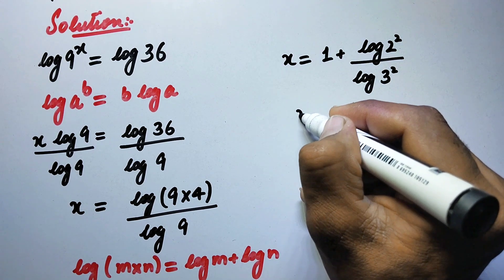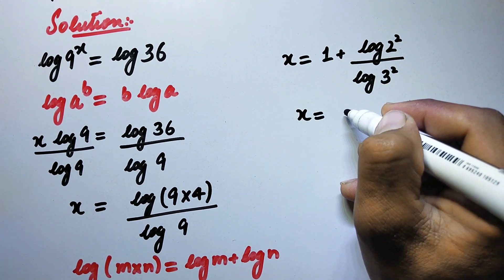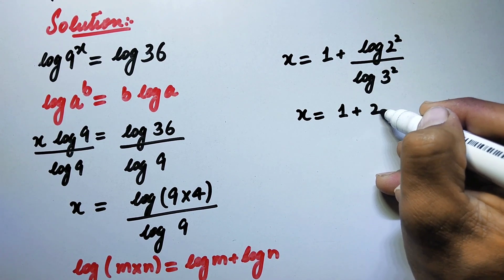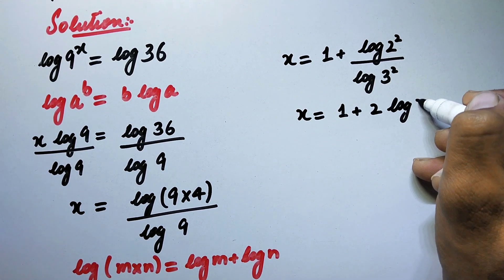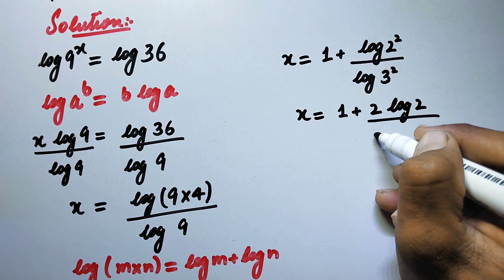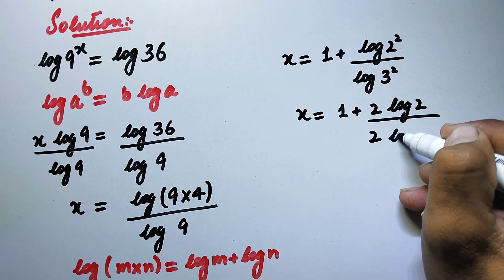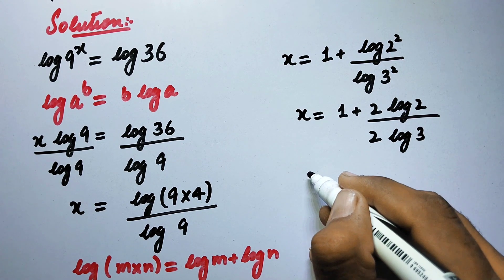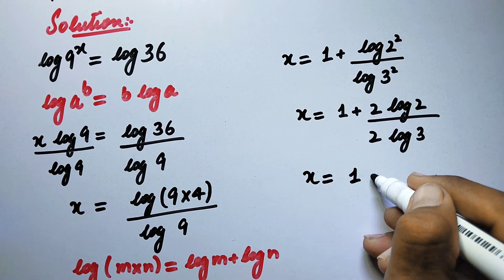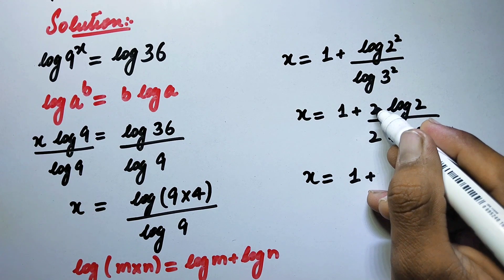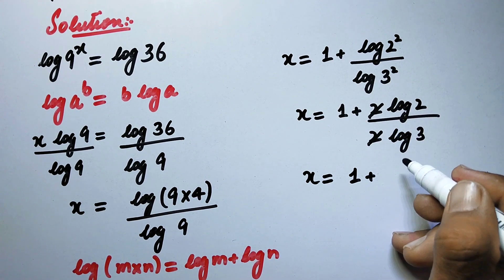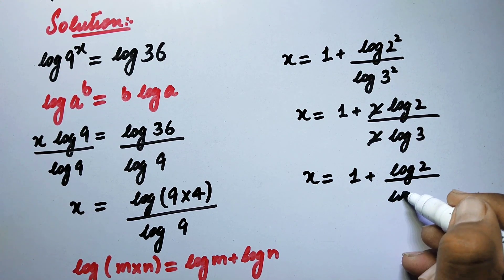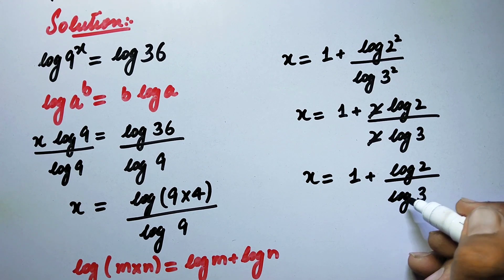So now here we can write x is equal to 1 plus here will be 2 times log of 2 divided by 2 times log of 3. So now x will be equal to 1 plus, this 2 will be cancelled by this 2, so here will be log of 2 divided by log of 3.